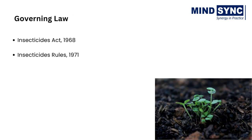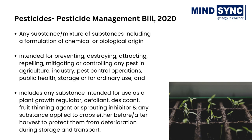The Insecticides Act of 1968 and the Insecticides Rules of 1971 regulate the import, registration, manufacturing, sale, transportation, distribution, and use of insecticides and pesticides in India. The Pesticide Management Bill 2020 has been passed for regulating the pesticide sector. The new Act will replace the Insecticide Act 1968 once approved.